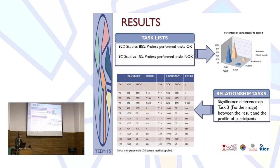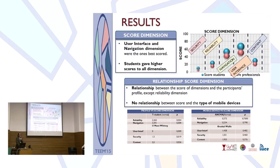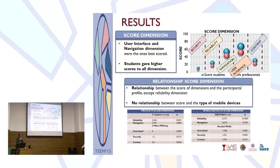Task three consisted of fixing the image on screen. Regarding the score by dimension, the results were based on the questionnaire used to evaluate the app. User interface and navigation were the dimensions best validated by participants, and students gave better scores than professionals. Regarding the relationship between profile and dimension scores, we found that participant profile is related to scores in most dimensions except reliability. So whether a participant is a student or professional influences their scores for most dimensions. However, the type of mobile device is not a factor that influences the final valuation.